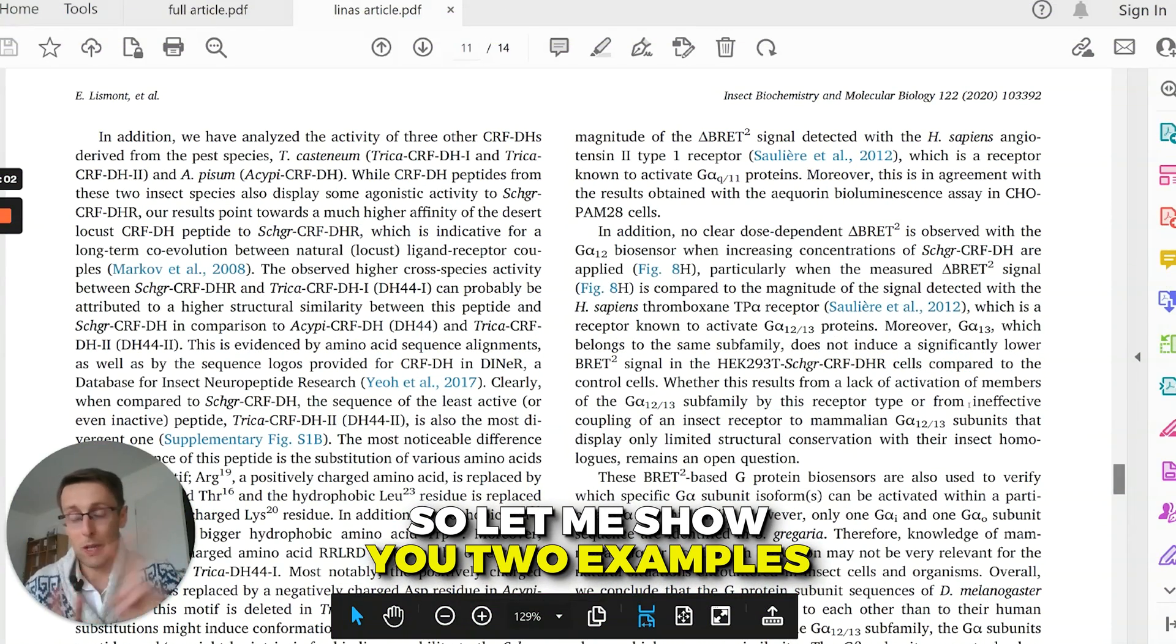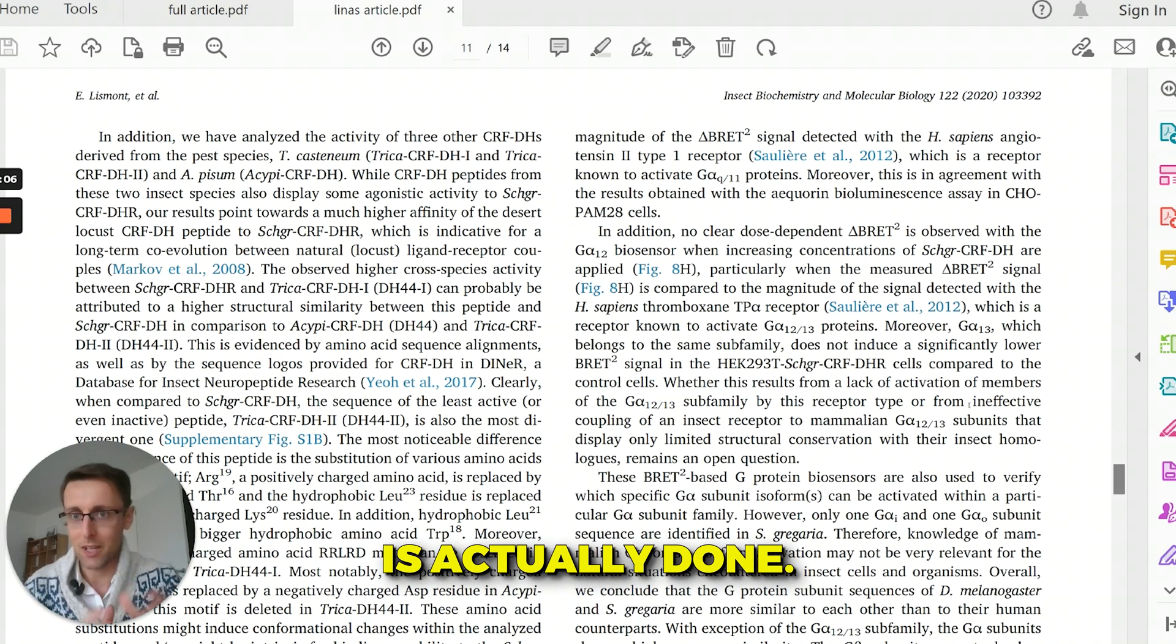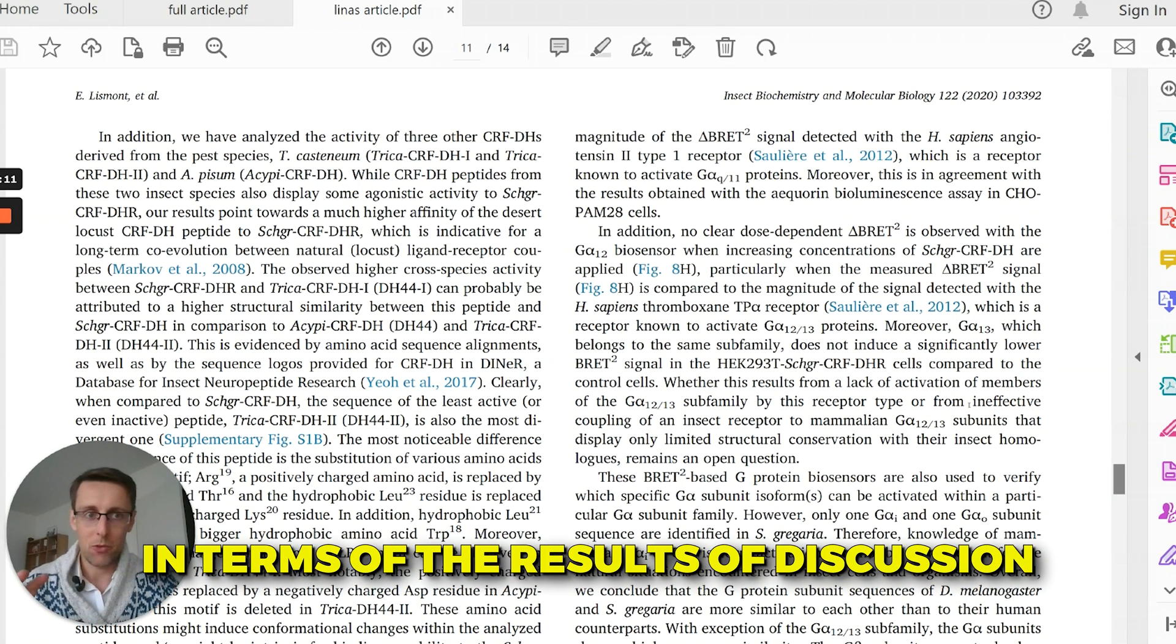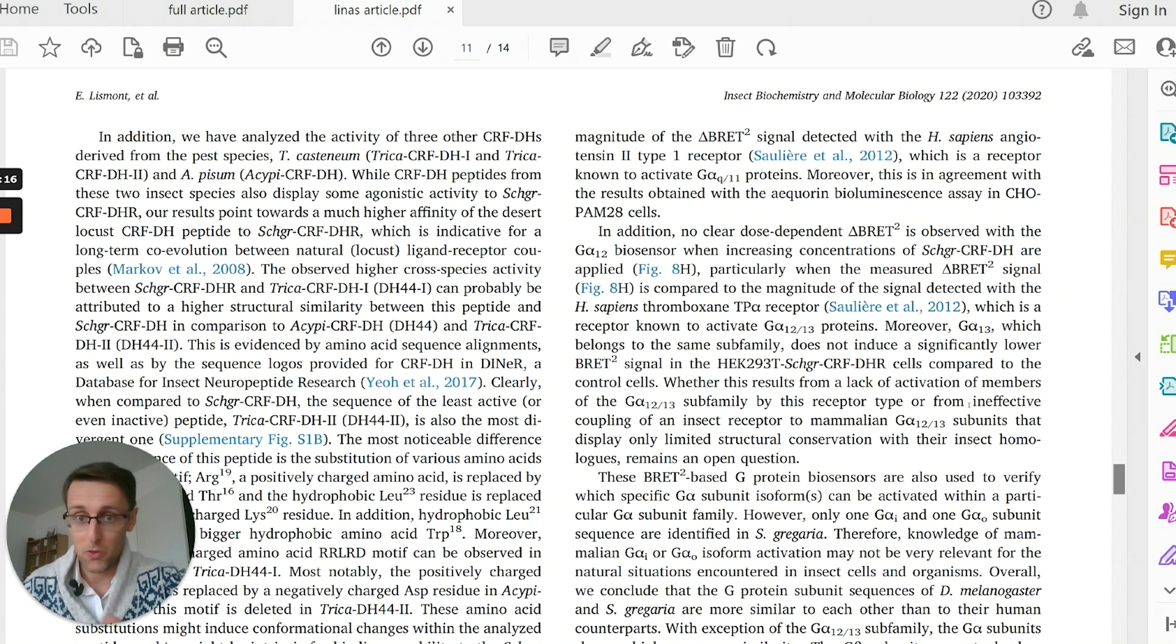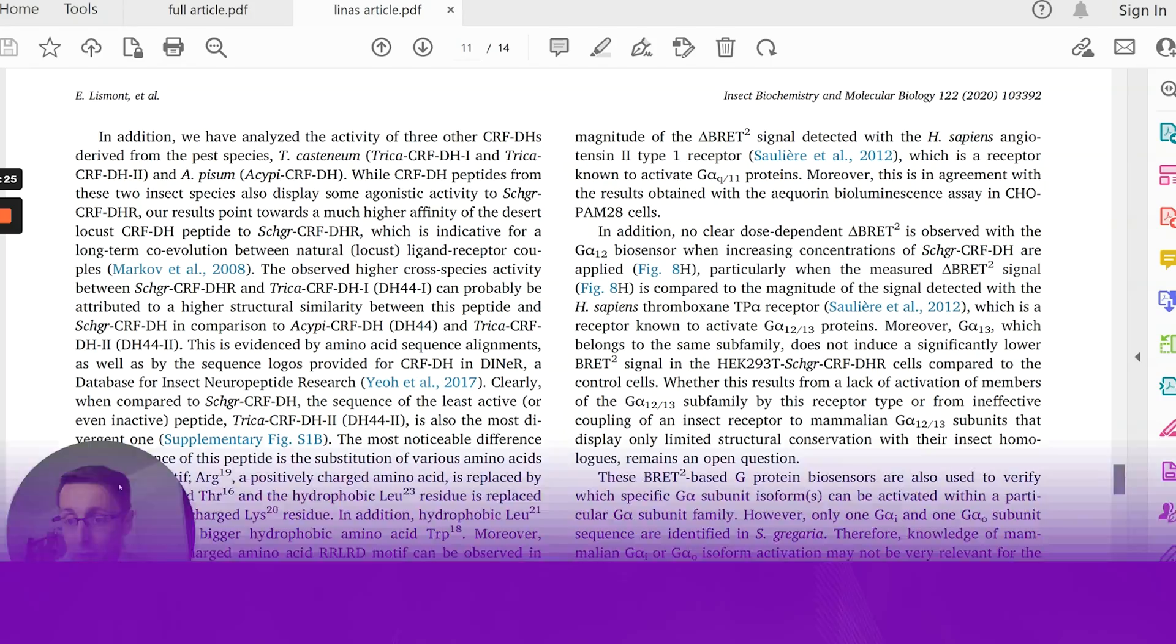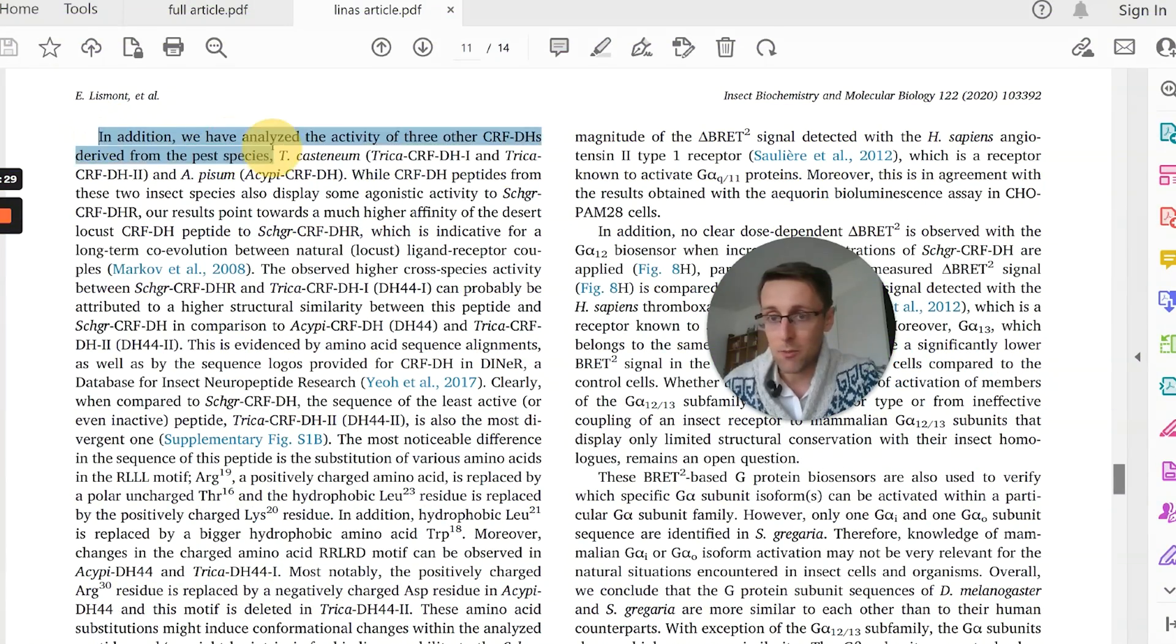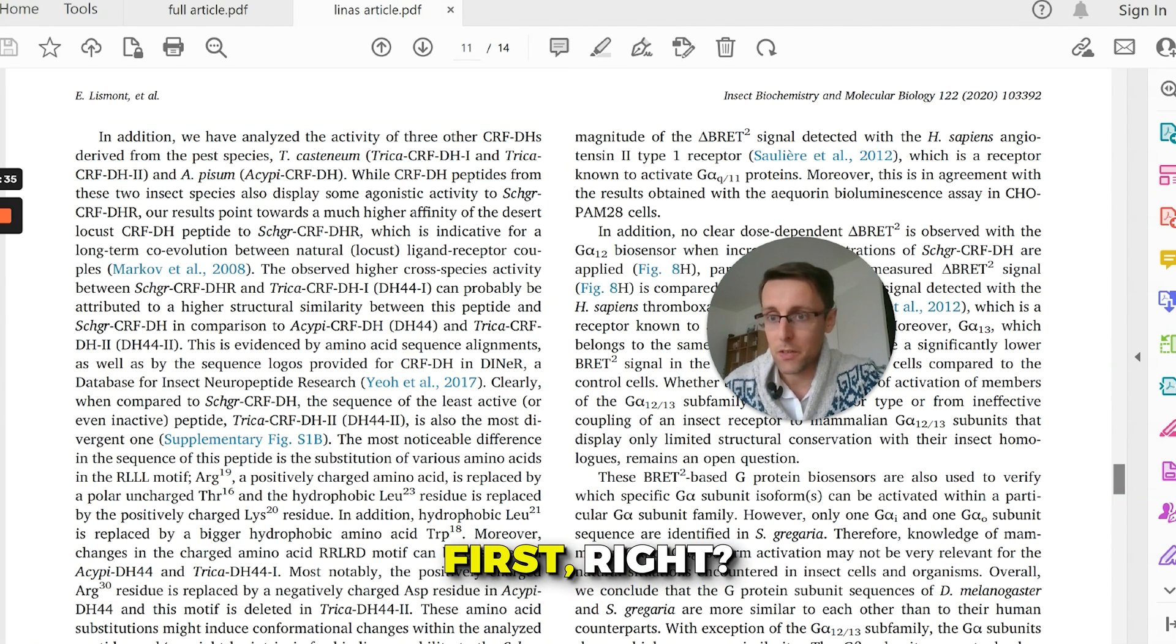So let me show you two examples from two different fields of how the discussion is actually done. And also each of those examples will be different in terms of the results and discussion being together and being separate. So the first example, this one is going to be one where results were presented first and then now discussion is a completely separate section. So how does it work? Well, you can see in here, if we just look at this paragraph, that the writer states the result first.